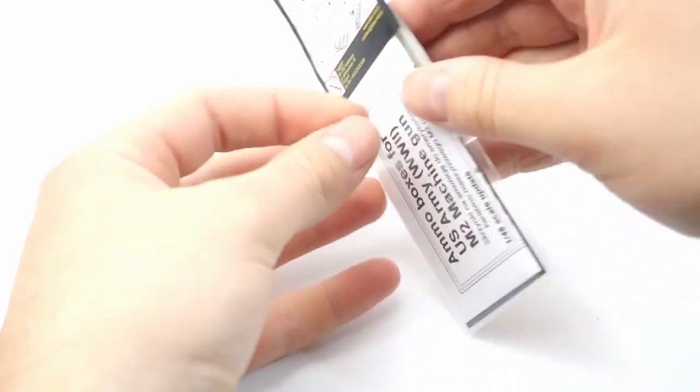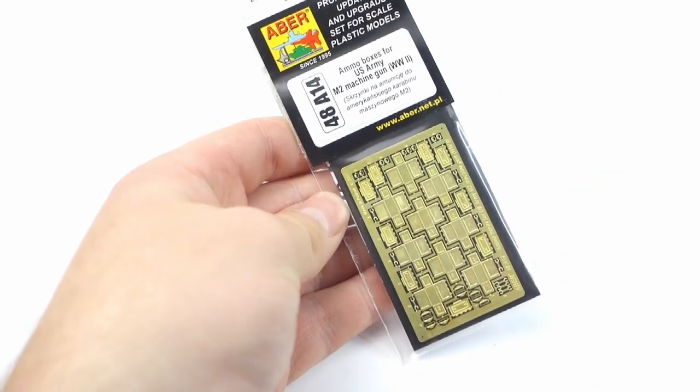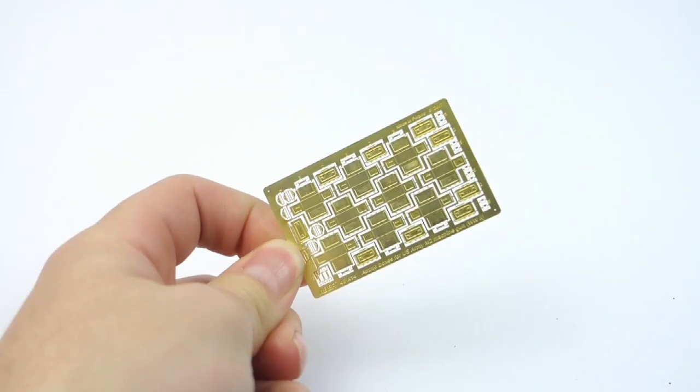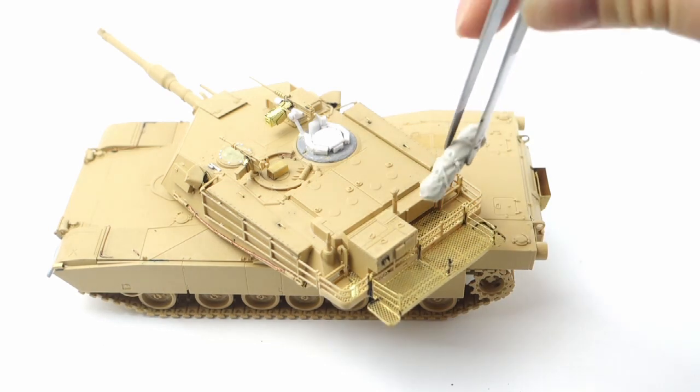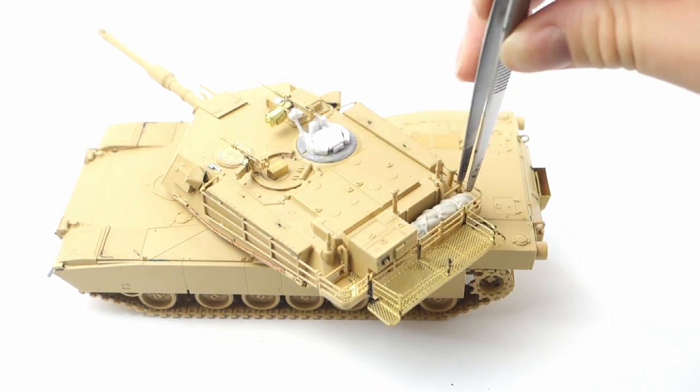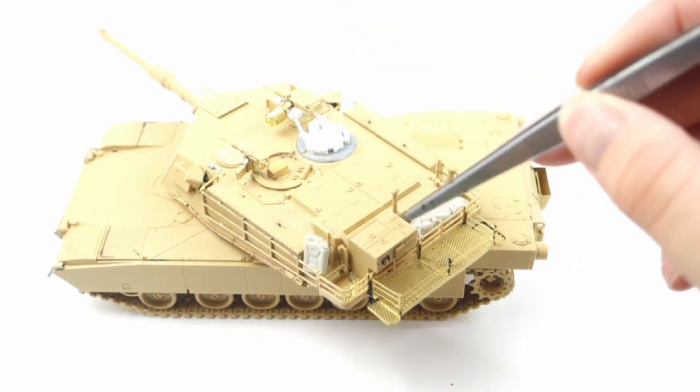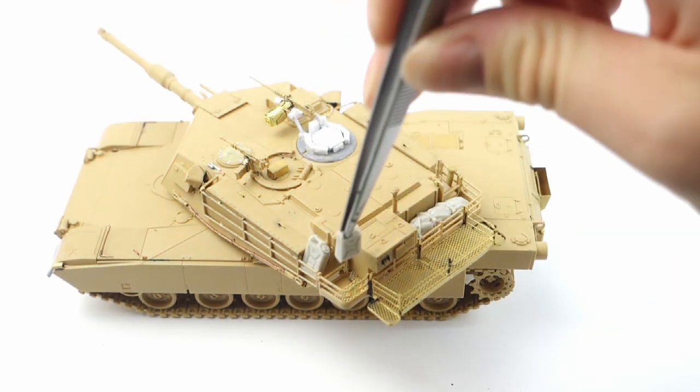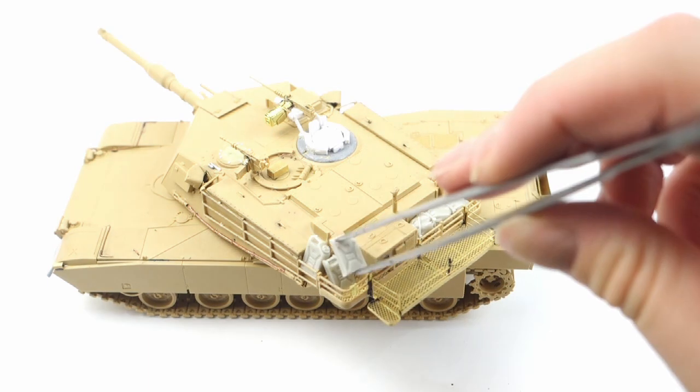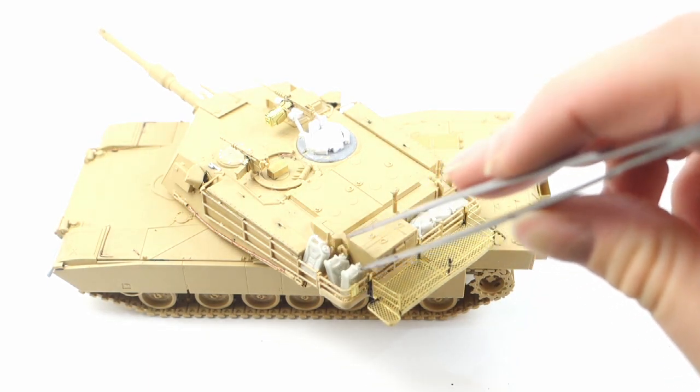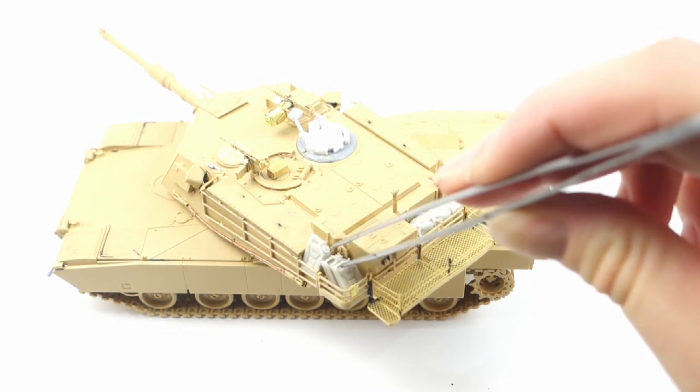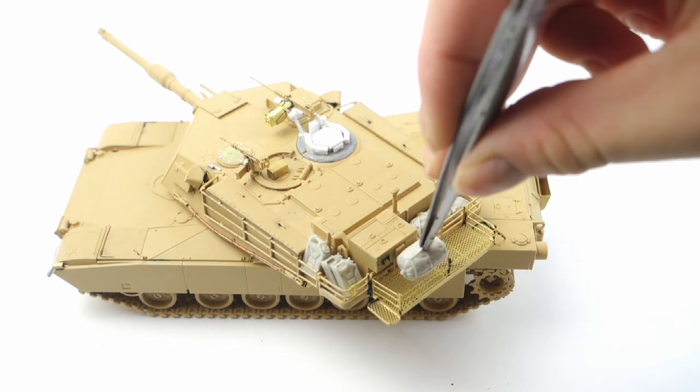I also have some photo-etched ammo boxes for this model. And after the cleanup and assembly, it's time to place all the stowage on the model. Thanks to the big stowage bins on the Abrams, I can place there a lot of things and I can paint them in interesting ways later too. Apart from metal ammo boxes and resin details, I've also made a sleeping foam pad from epoxy putty.